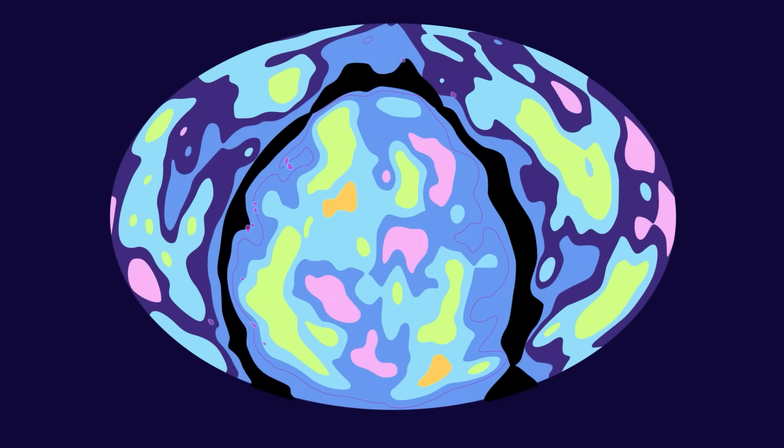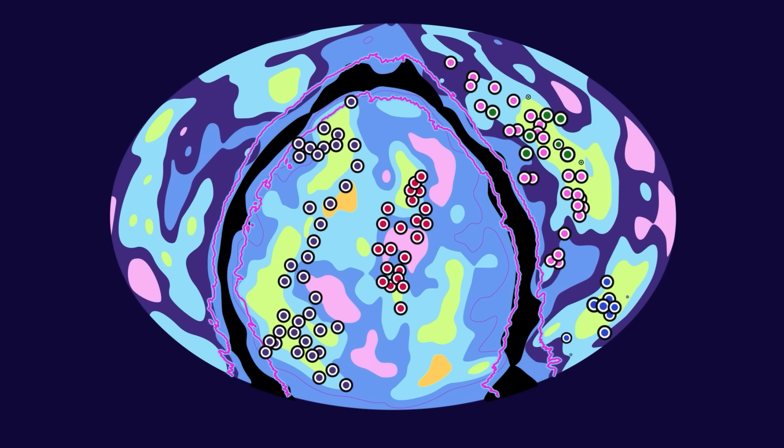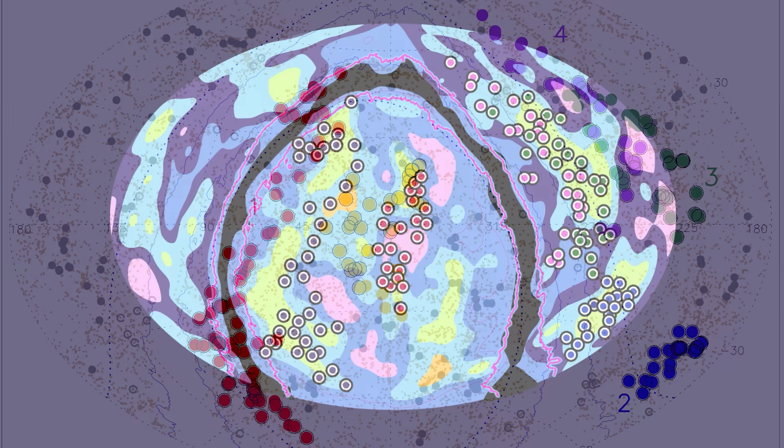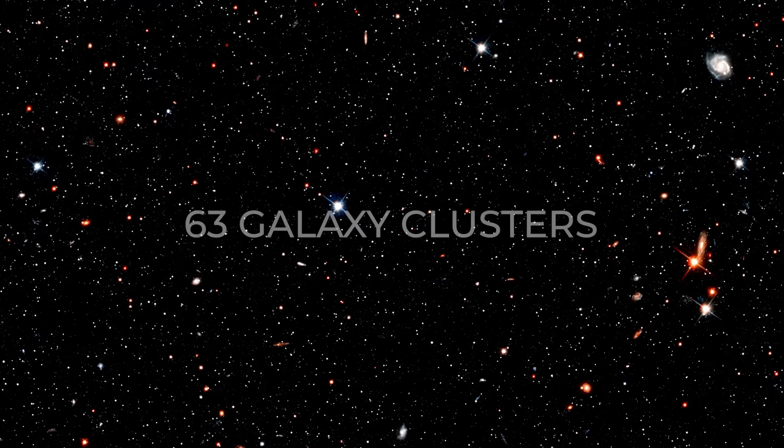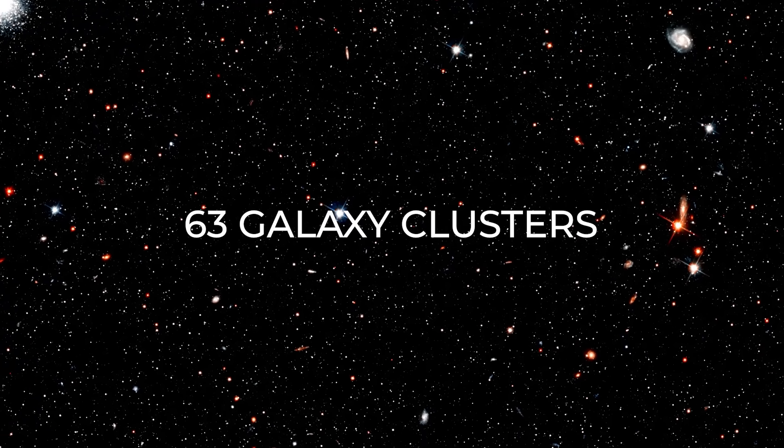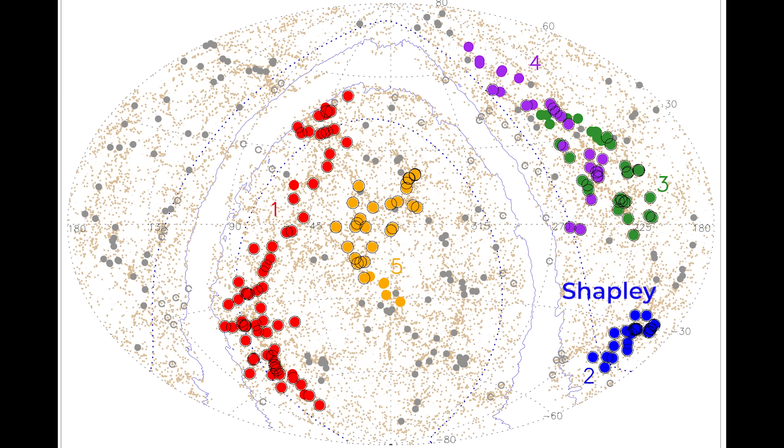The search led to an amazing discovery, five gigantic superstructures in space. These regions have a much higher number of galaxy clusters than the rest of the universe. The biggest one is Quipu, which is shown in red in this figure from the research paper. Quipu includes 63 galaxy clusters, an incredibly dense gathering of galaxies. The other four superstructures are Shapley, Serpens Corona Borealis, Hercules, and Sculptor Pegasus.